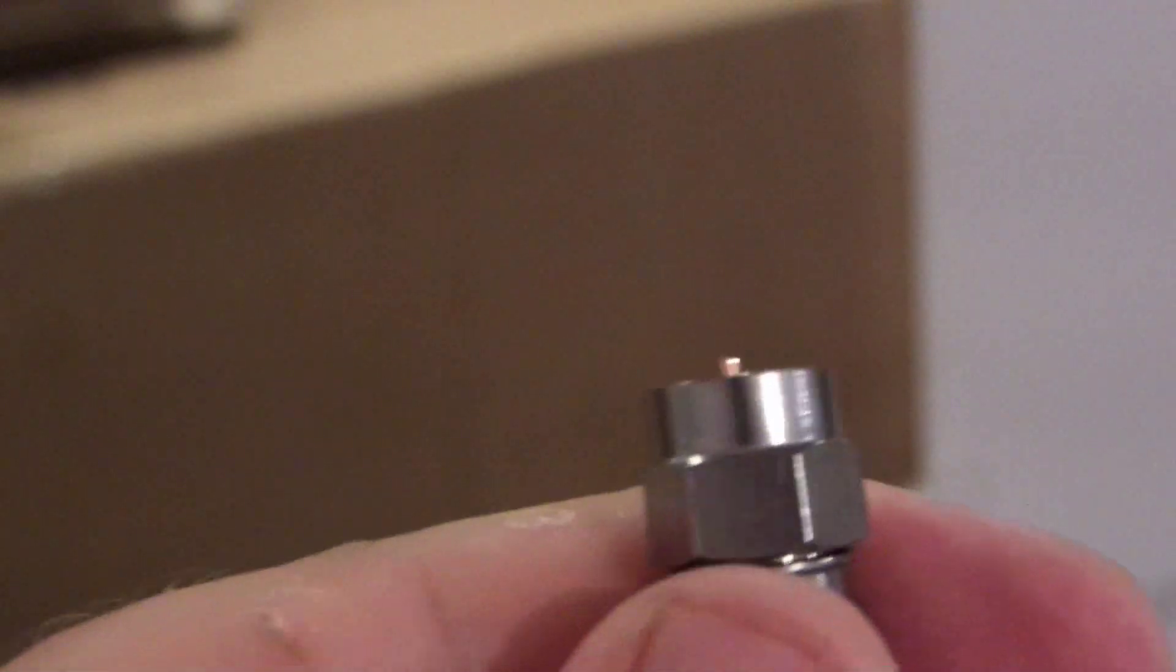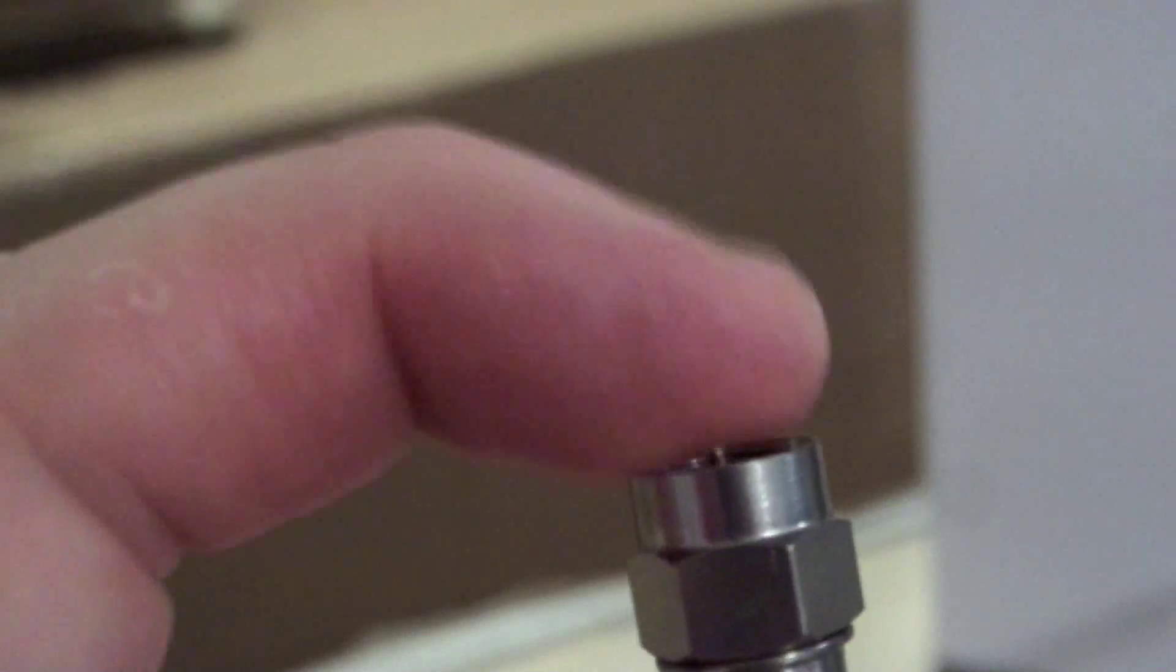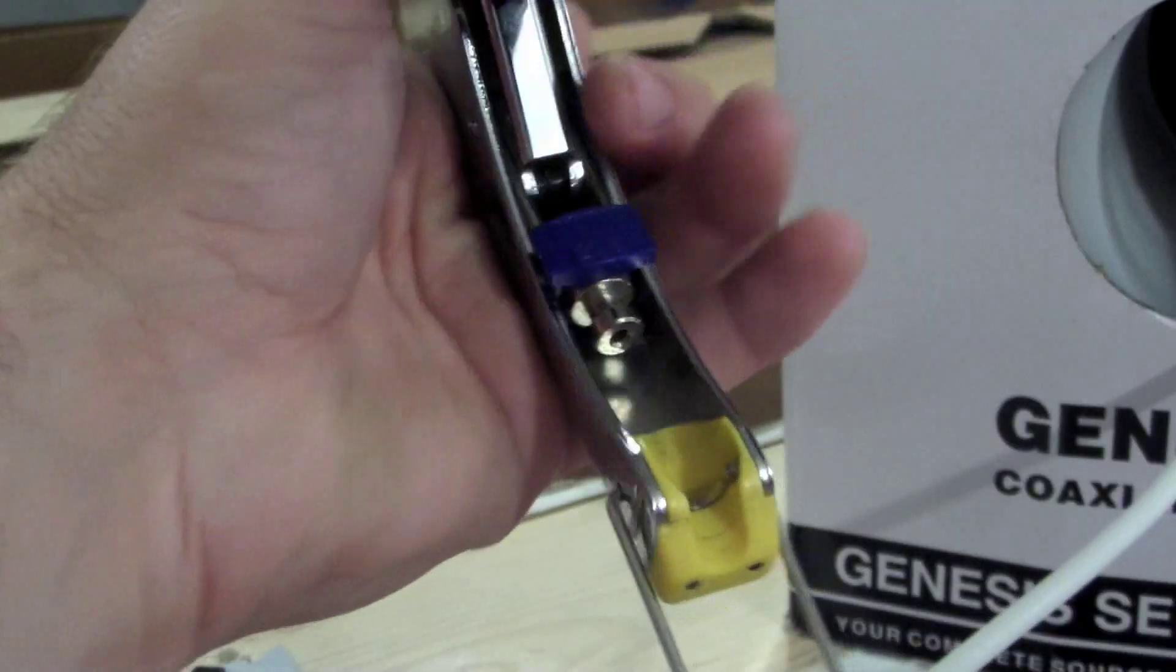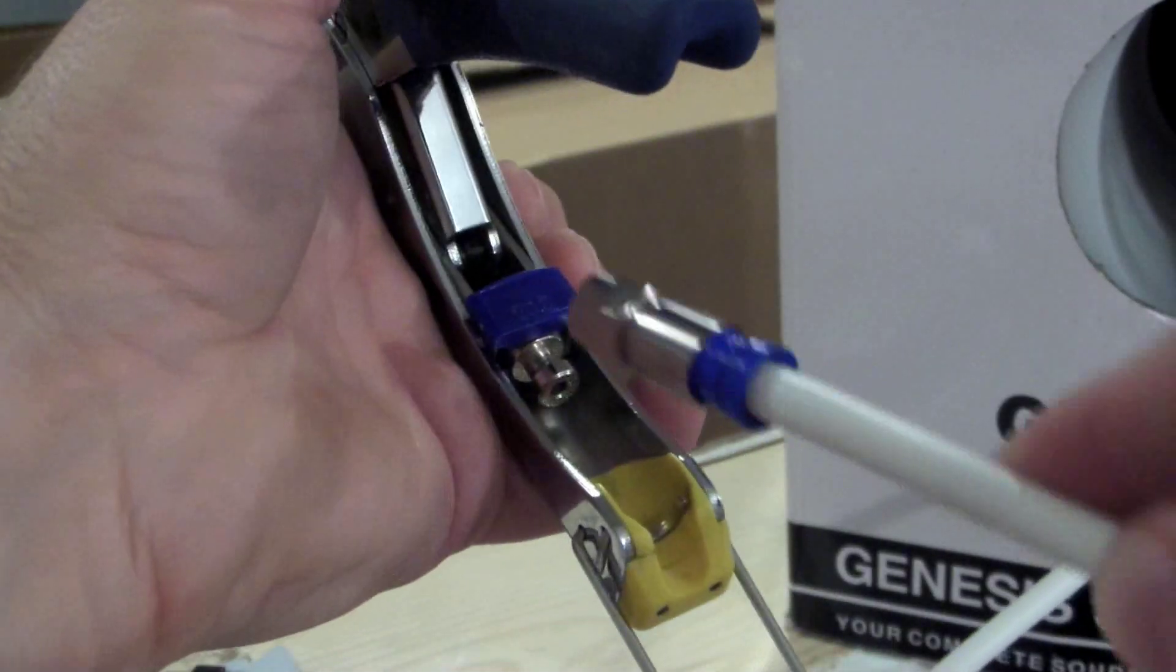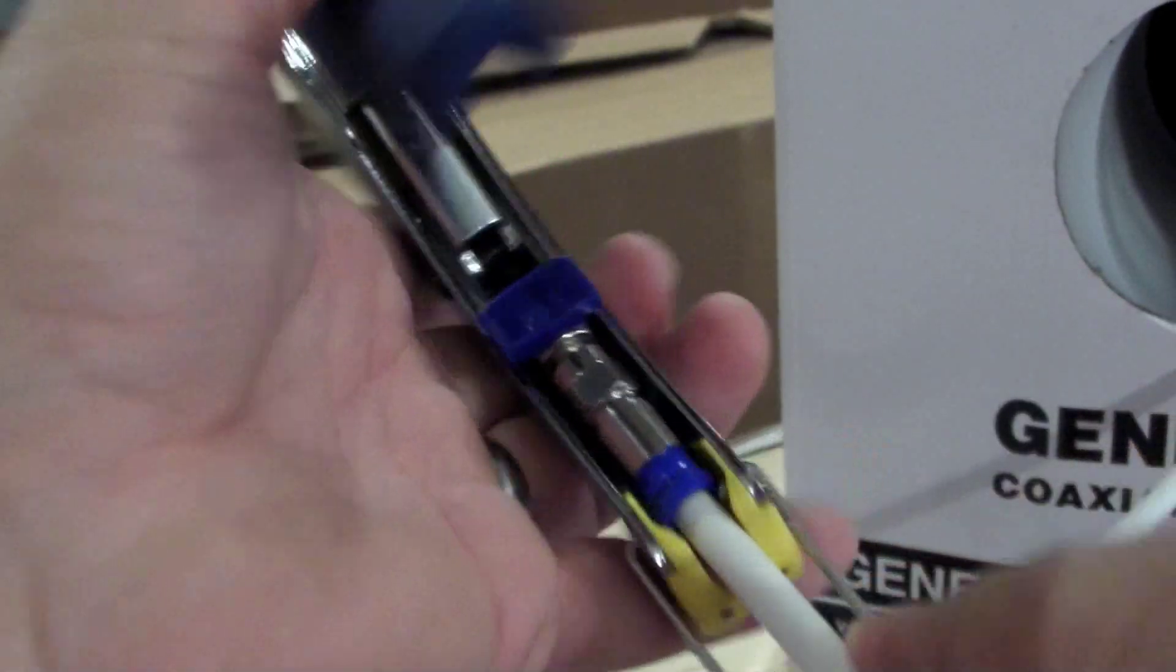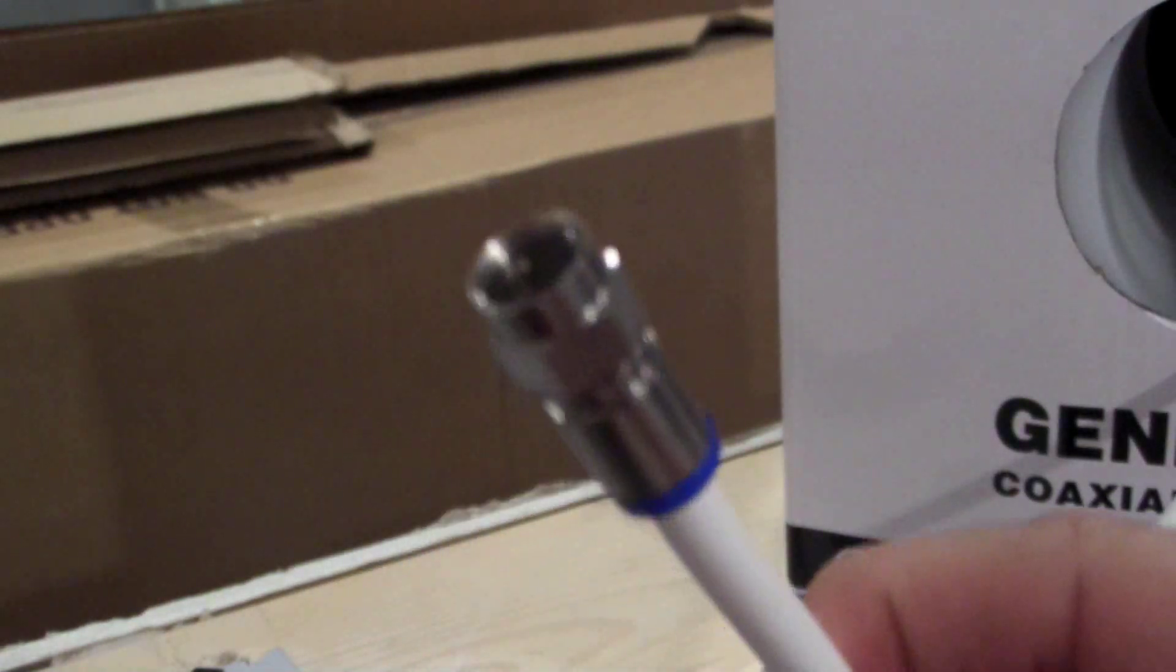Alright, so we don't want it over the edge too much. If you get too much of the end right here, you'll just have to snip it off. But that looks really good right there. Alright, now we'll take our crimping tool, and we will just take this at an angle and slide it in here. And then, boom. You've got your end.